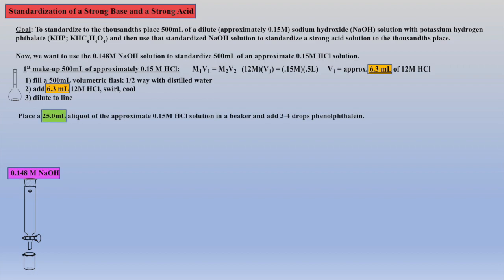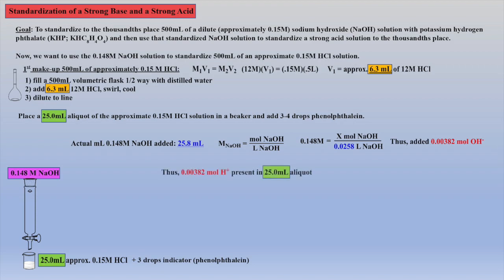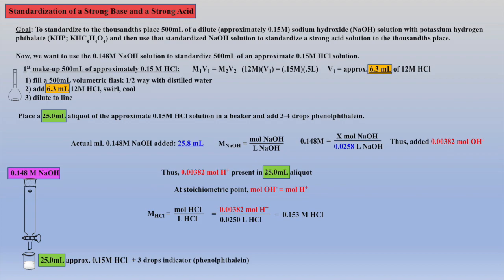Now we remove a 25 milliliter aliquot of the approximate 0.15 molar solution of HCl, transfer to a beaker, add a few drops of indicator, and begin the titration with the standardized NaOH. When the experiment was completed, a total of 25.8 milliliters of base were added, which is easily converted to moles of base: 0.00382 moles sodium hydroxide. If 0.00382 moles of base were added, then 0.00382 moles of acid were present in the 25.0 milliliter aliquot, because at the equivalence point moles base equals moles acid. The molarity can then be calculated as 0.153 molar.